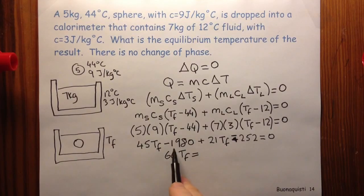And then I want to take these two to the other side. I want to take the minus 1980 to the other side and the minus 252 to the other side. So I get 1980 plus 252 equals.